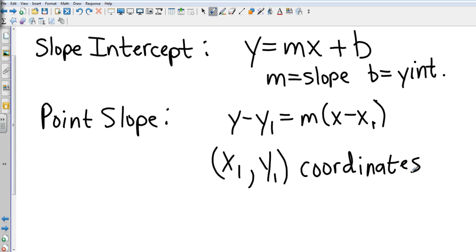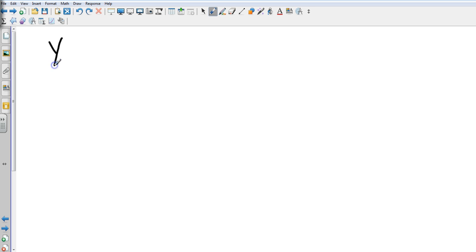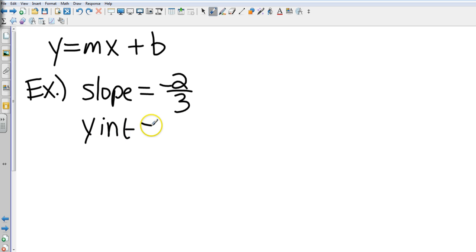Let's look at some examples. Let's start with slope-intercept form first. They're going to give you an example problem. Let's say they tell you the slope is negative two-thirds and the y-intercept is negative eight. So they're going to ask you to write it in slope-intercept form.